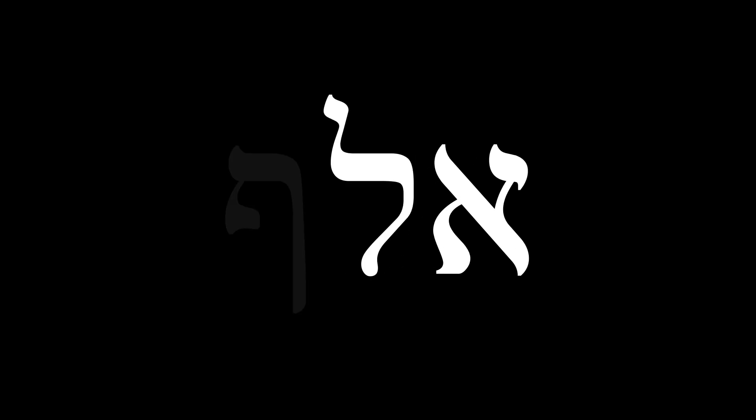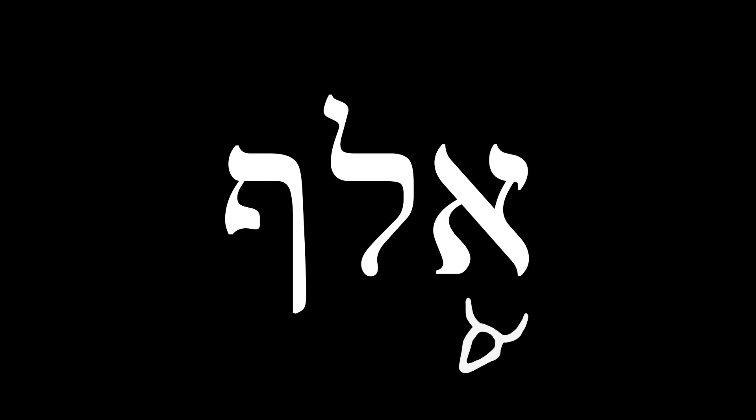Right to left: Aleph, Lamed, Peh. These letters evolved from ancient pictographs that represented an ox head, a shepherd's crook, and a mouth.